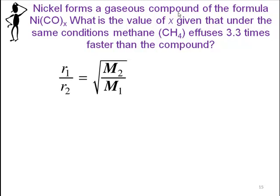Here's our equation right here. We can set up - which one do we want? The M1. So more mass of one, and that's methane. We have methane as gas one. We put that down here.